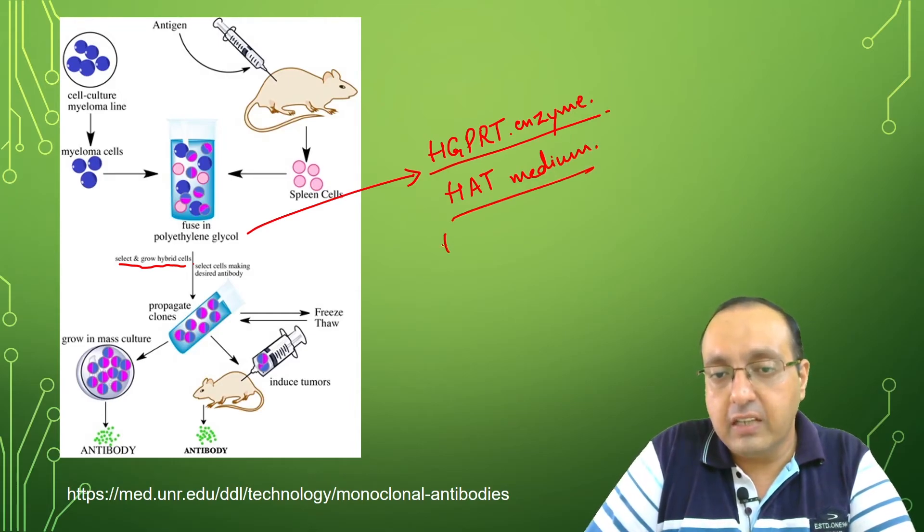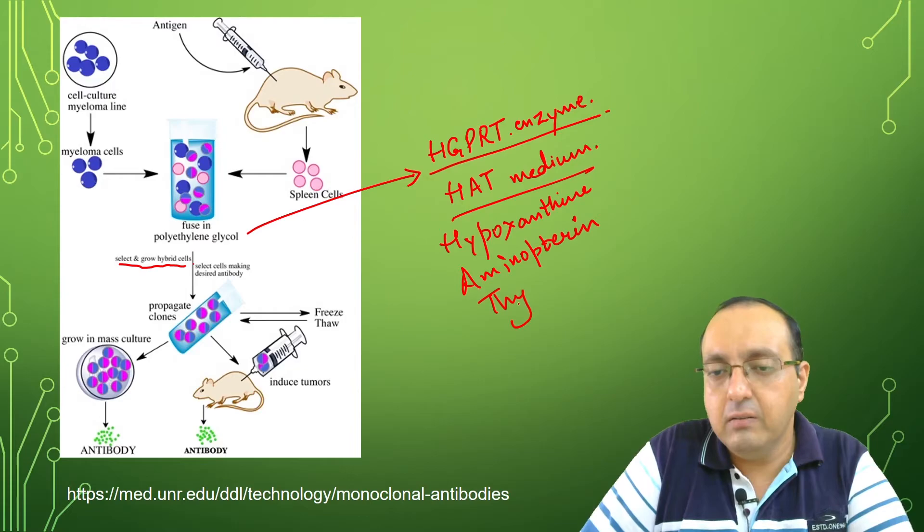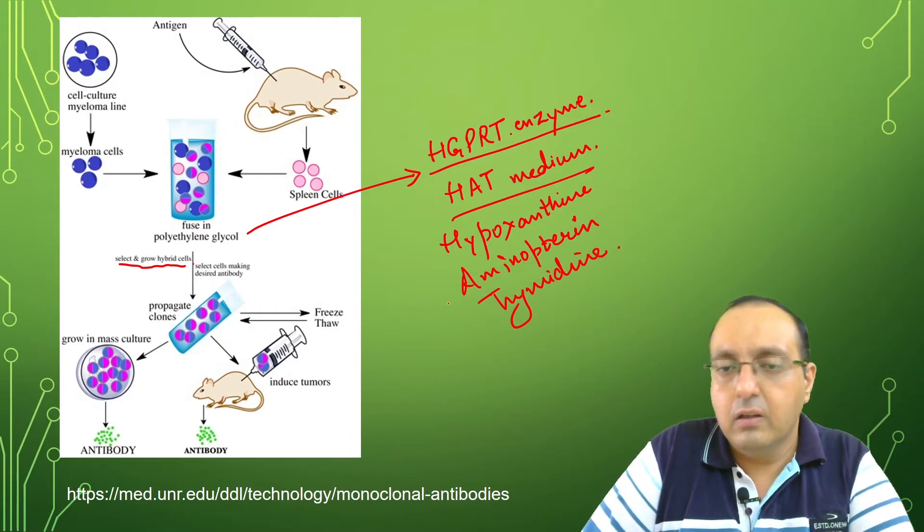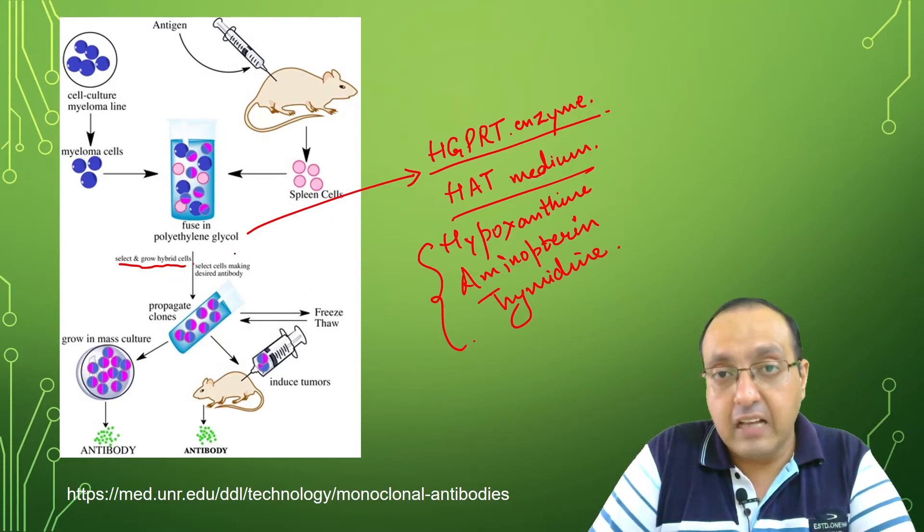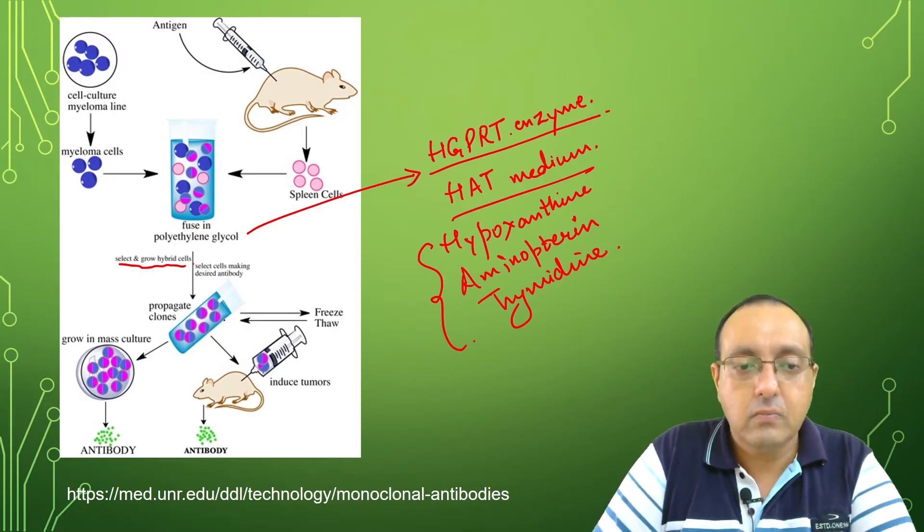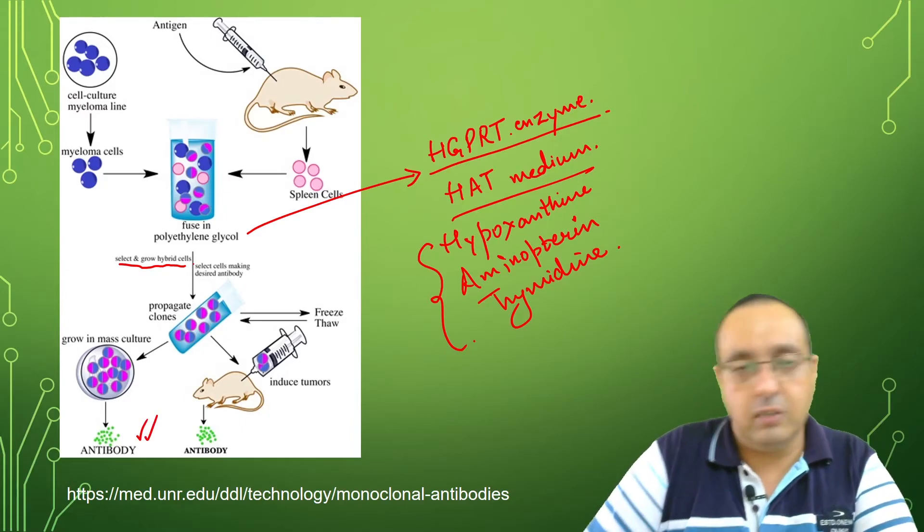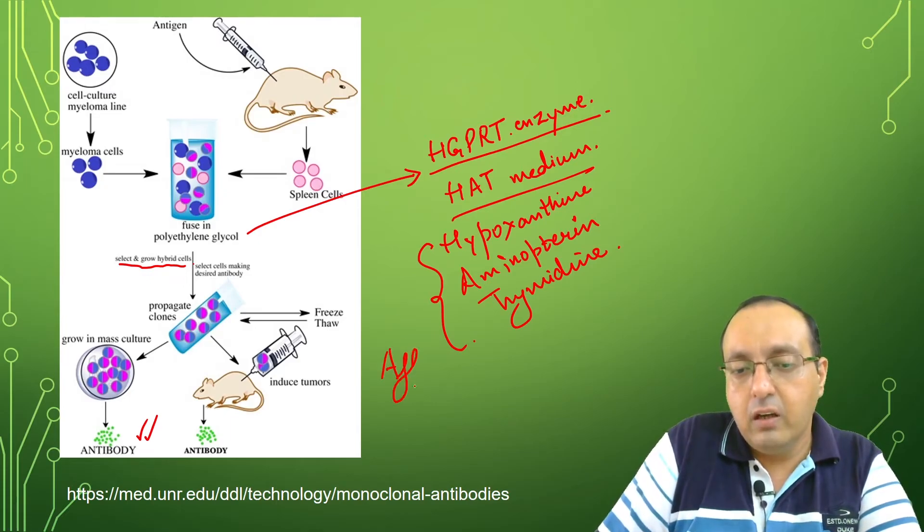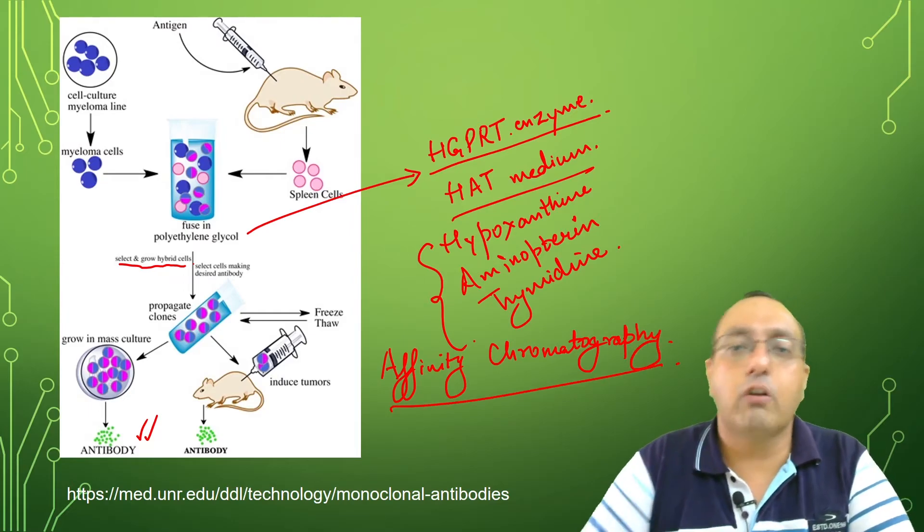We select for cells which are producing our antibodies and propagate these clones. We grow them in mass culture and then purify the antibody. Purification of antibody is usually done using affinity chromatography. This is the overall procedure of producing monoclonal antibodies.